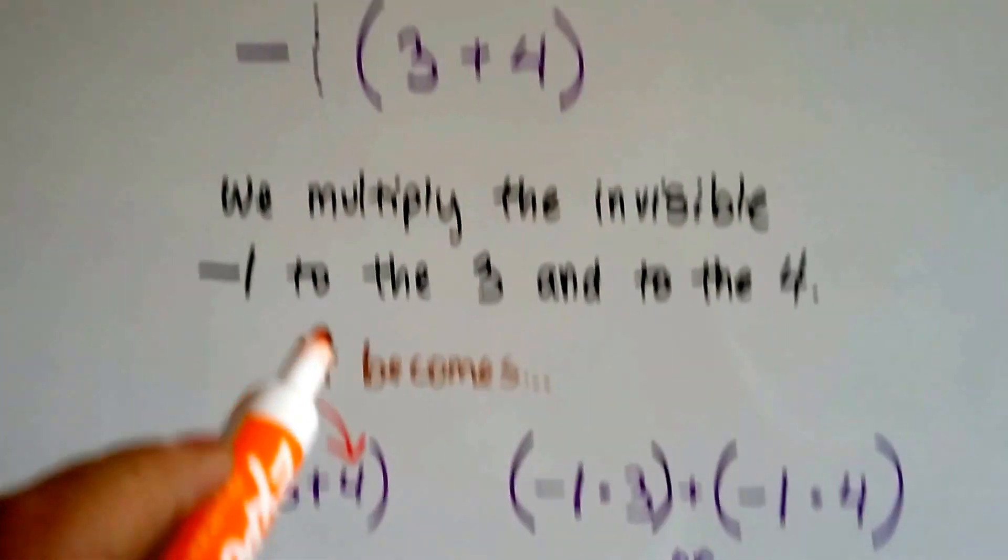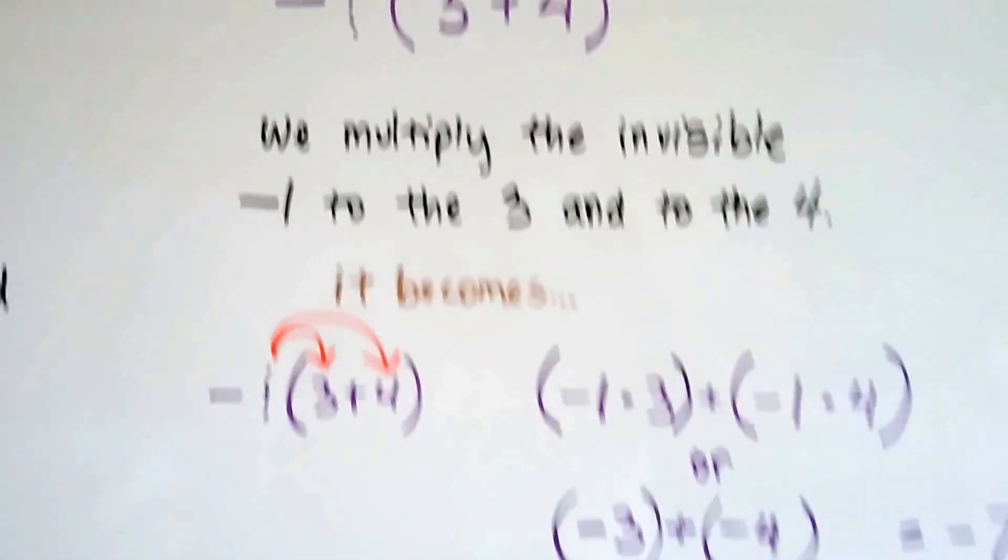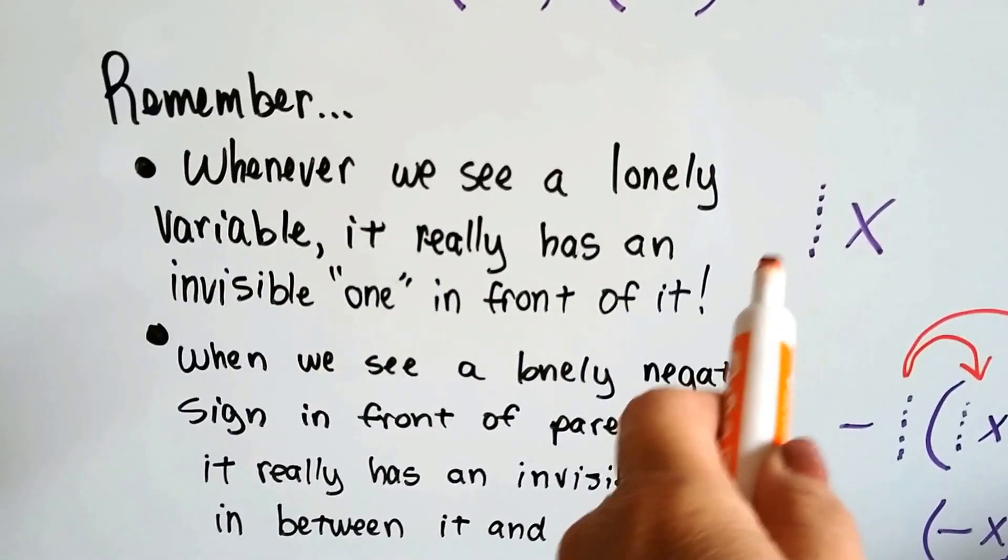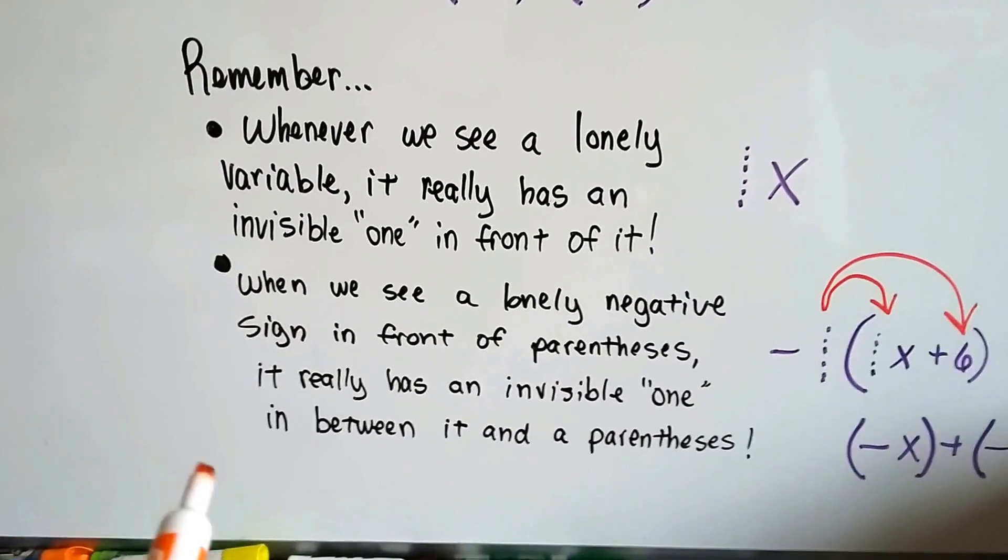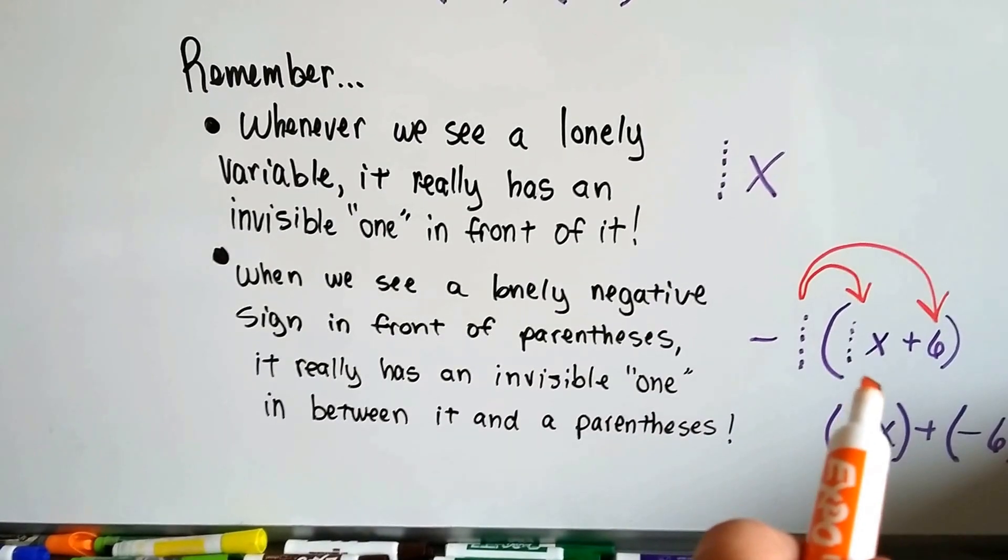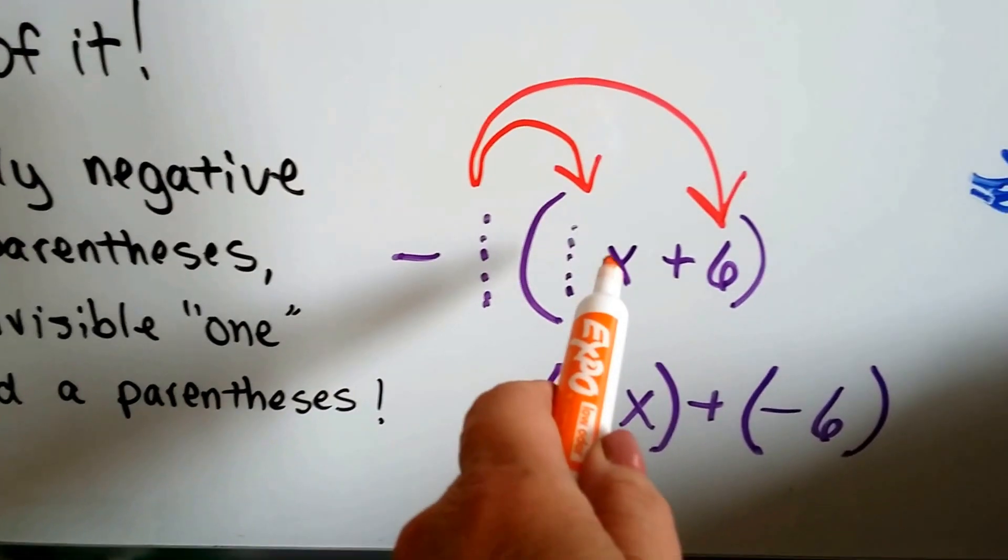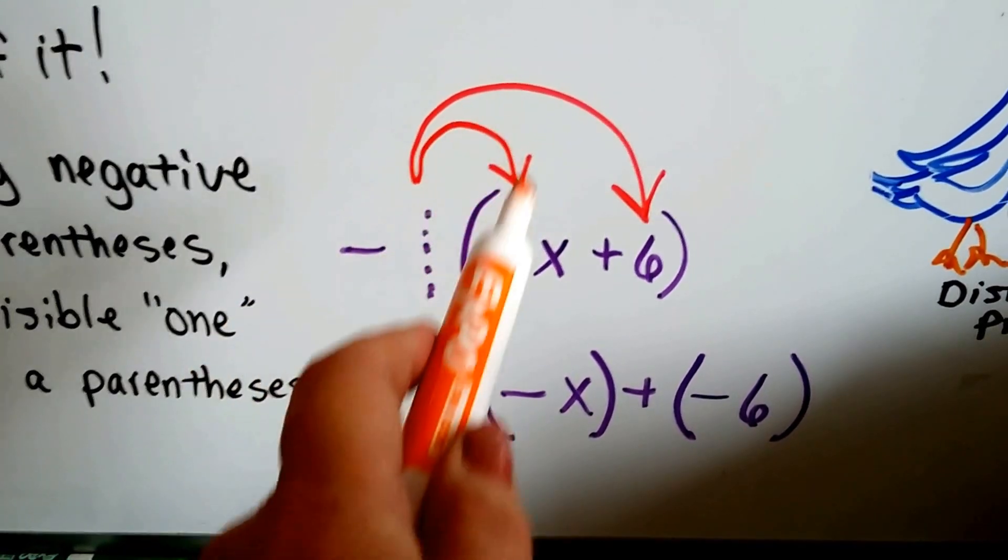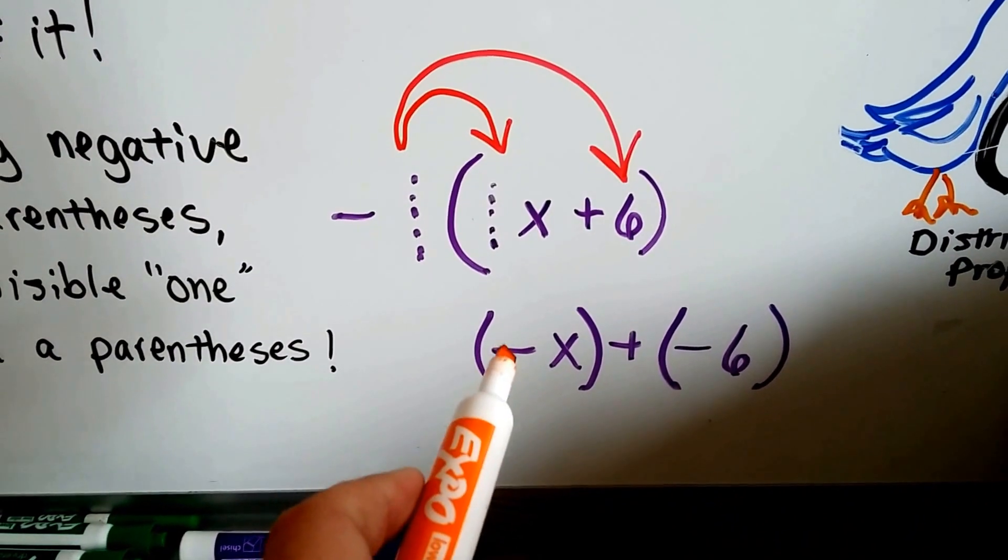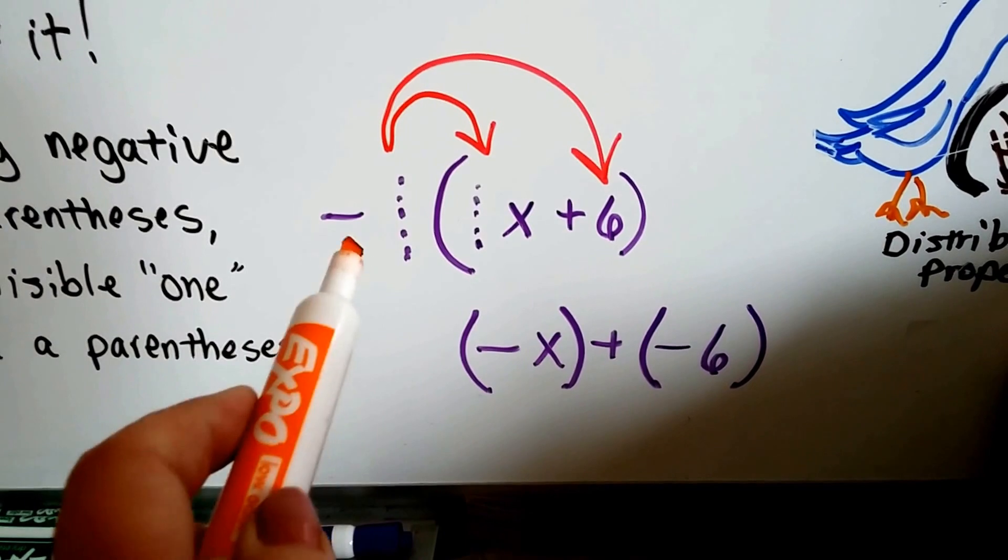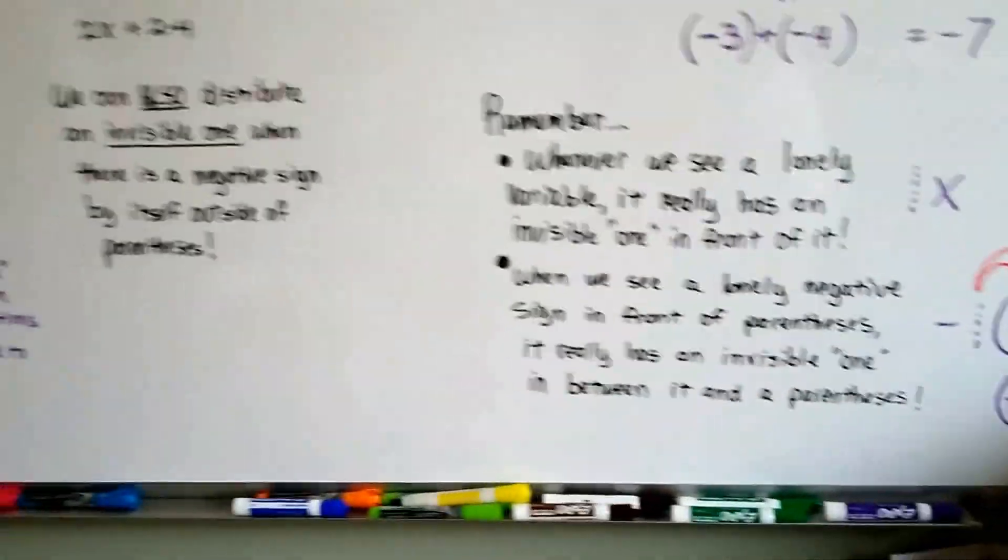So there's an invisible 1 right here. When you see a negative sign right up against the parentheses, imagine it has a negative 1. So whenever you see a lonely variable, whatever the variable is, if there's no coefficient, it really has an invisible 1 in front of it, and that can help us solve equations. And when we see a lonely negative sign in front of parentheses, it really has an invisible 1 in between it and the parentheses. We could even put our invisible 1 in front of that x and say negative 1 times 1x and negative 1 times 6, and it would be negative x plus negative 6. Because we distributed each one of them. We just don't write the 1 because we don't have to. We know it's there. We can see there's just one x, right?